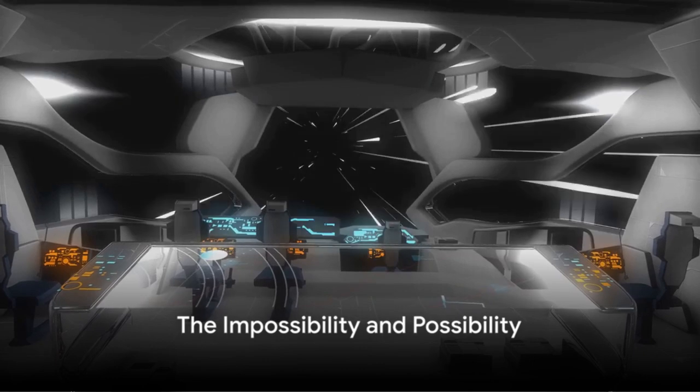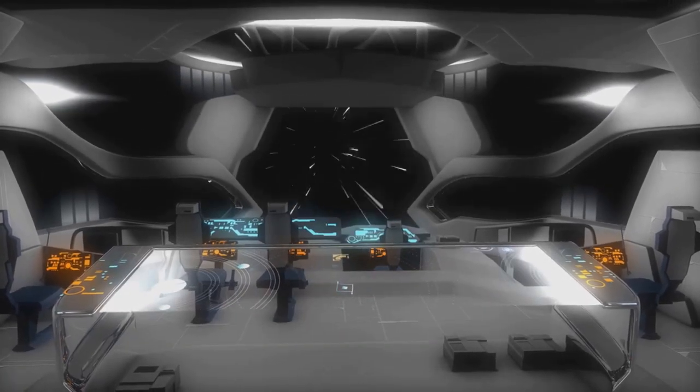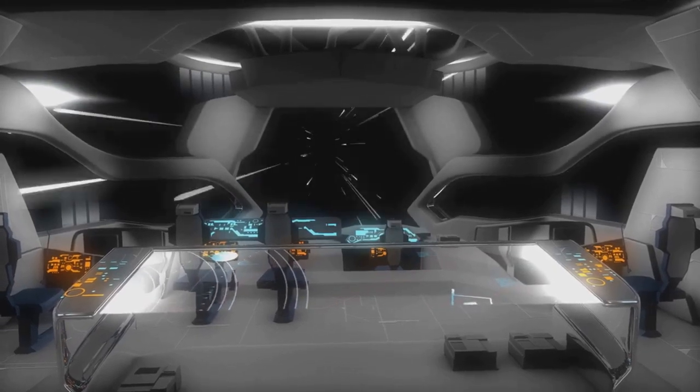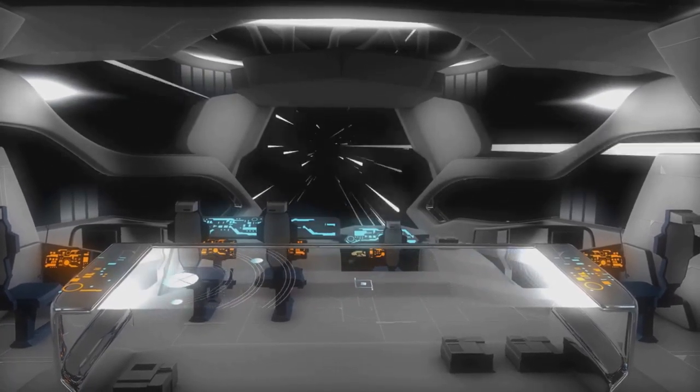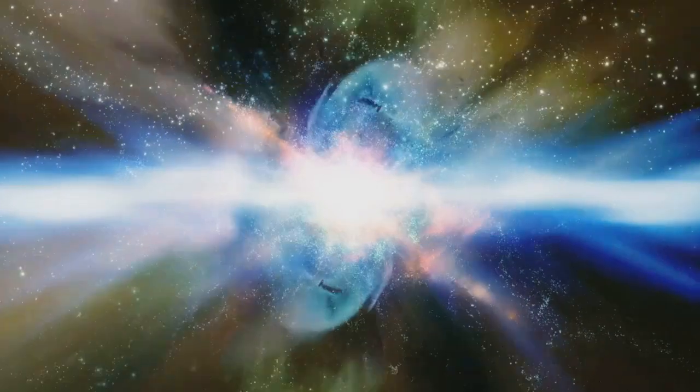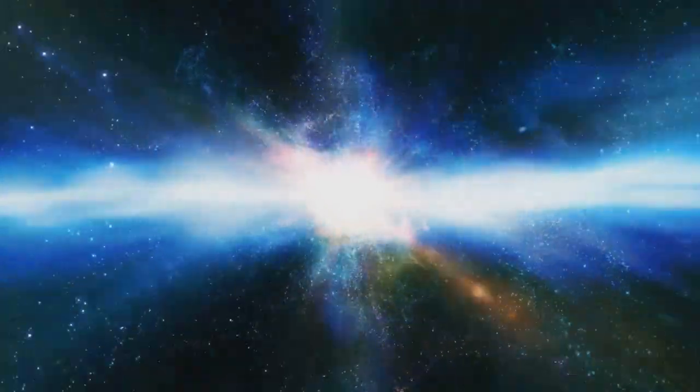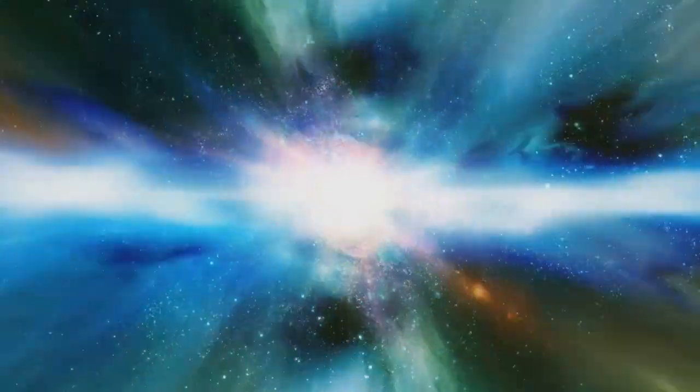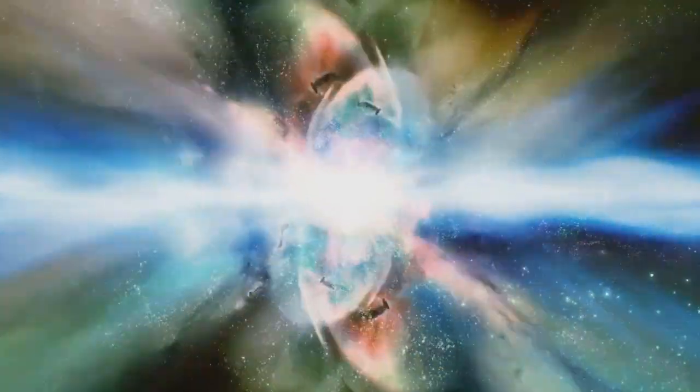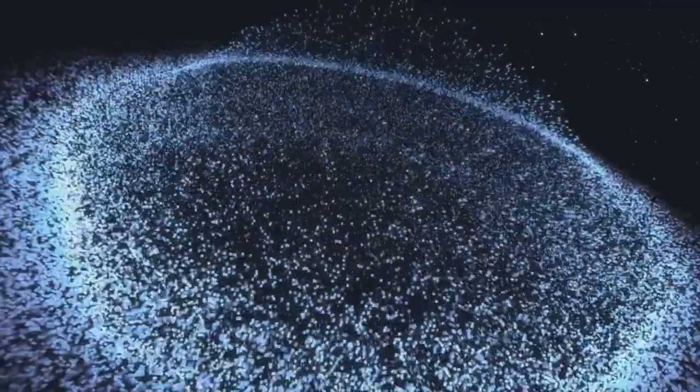With our current understanding of physics, human light speed travel seems impossible. A brick wall of impossibility stands before us, erected by the very laws of physics we've come to understand. The speed of light, a staggering 186,000 miles per second, is a barrier that we, as humans, can't simply vault over. Firstly, we confront the daunting challenge of infinite energy. Einstein's theory of relativity tells us that as an object with mass accelerates towards the speed of light, its energy requirement grows exponentially, ultimately becoming infinite. The energy needed to propel a spacecraft to light speed is more than the total energy output of the sun in a year. We don't have that kind of power at our disposal.